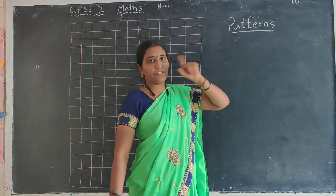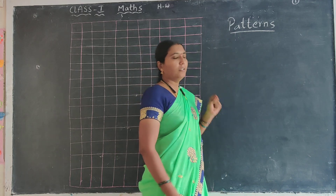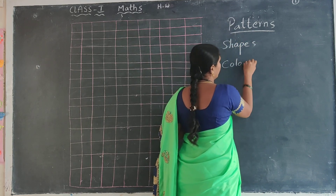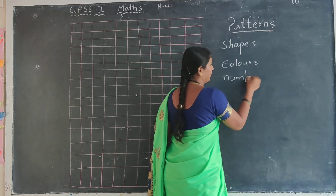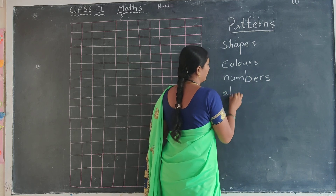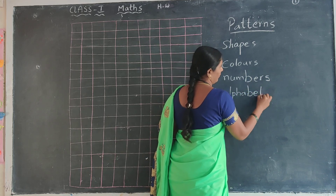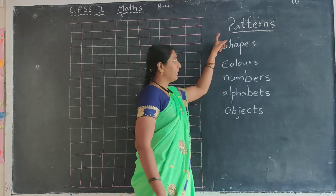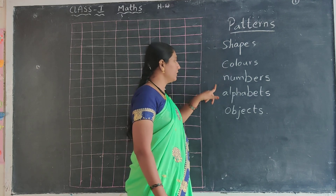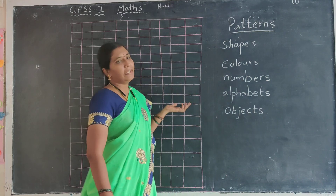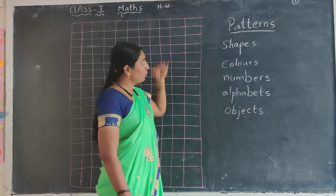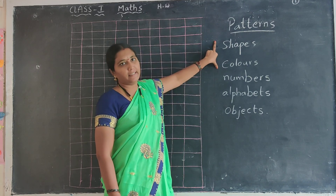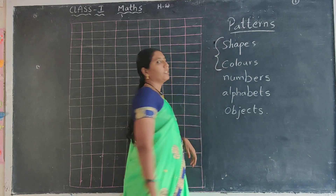The definition of patterns: patterns can be made using shades, colours, numbers, alphabets, and objects. I have already explained about this. Patterns can be made using shades, colours, numbers, alphabets and objects. Today I give homework on how to make patterns in shades and colours — on these two topics only.